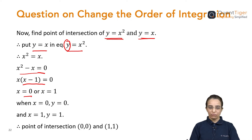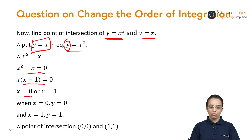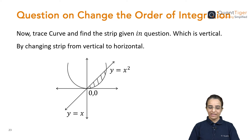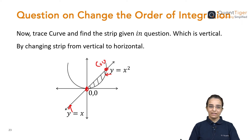Now we have to find the y-coordinates as well for these two intersecting points. Since y = x, whenever x is 0, y will be 0, and when x is equal to 1, y is equal to 1. So both points of intersection of the parabola and straight line have been found. The next step is drawing the sketch. I have drawn this sketch — this is the parabola y = x square, and this is the straight line y = x passing through the origin. The two intersection points are the origin and (1, 1), and the shaded region is bounded between these two curves.